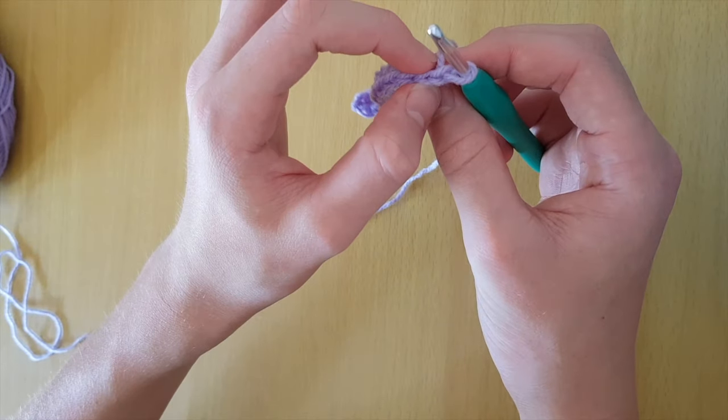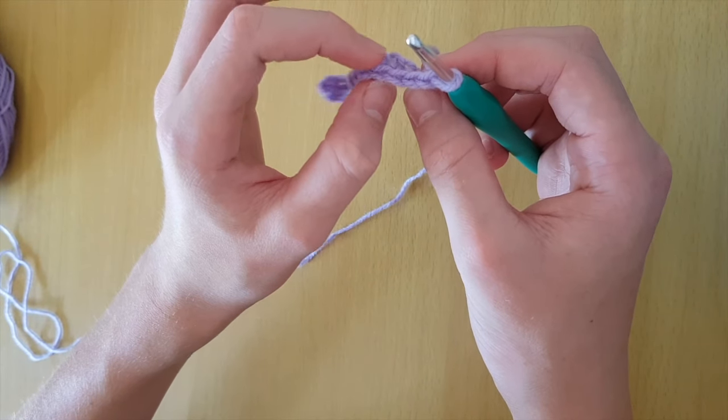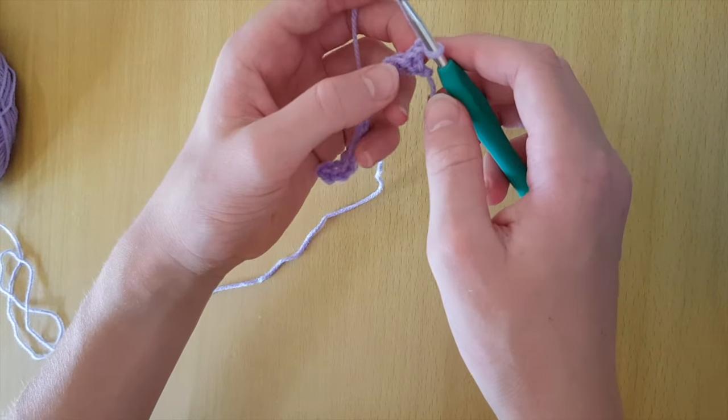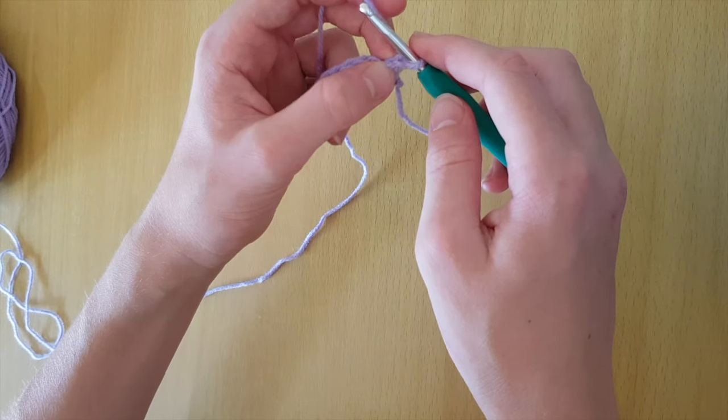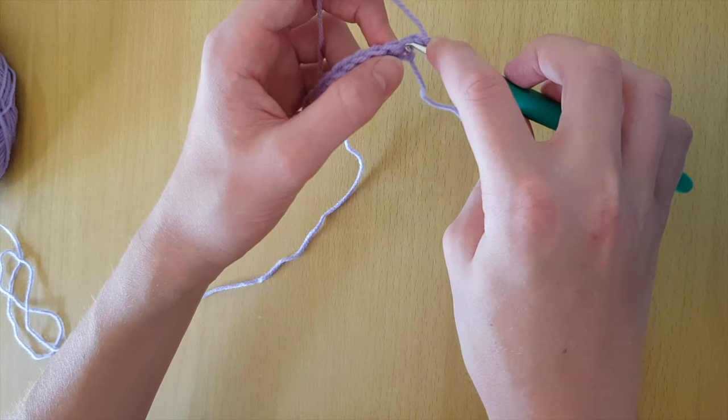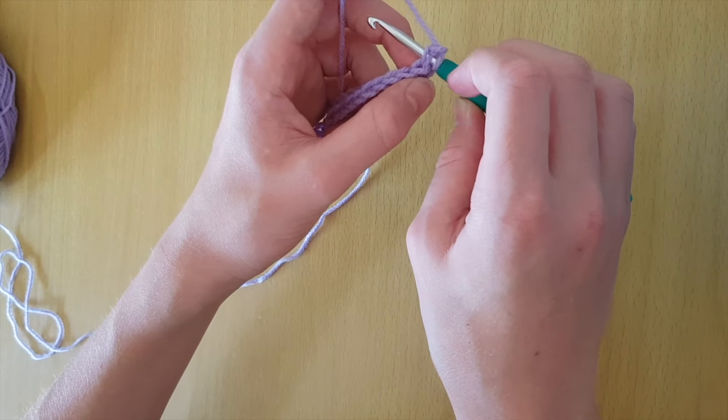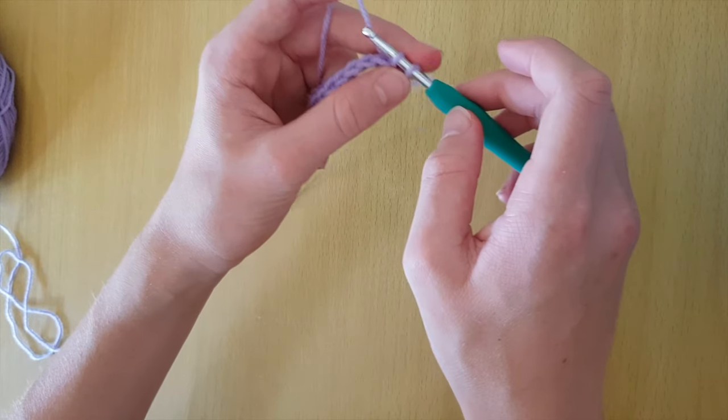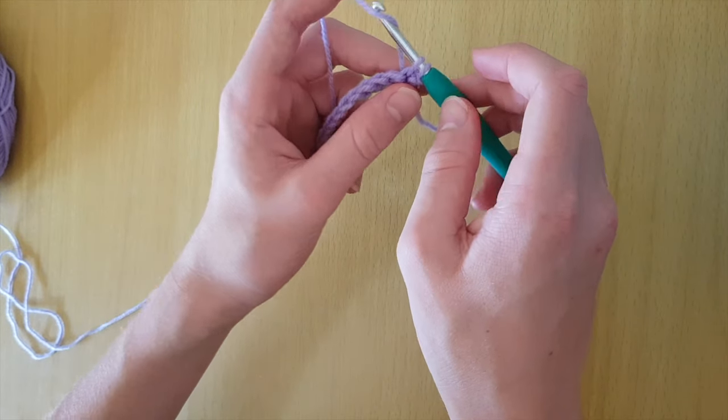This row you will be working into both V's of all of the stitches. This is different to the foundation chain row. This is also the row you will be repeating for the rest of the pattern. Make sure you don't work into your turning chain though. The single crochet stitch is exactly the same as the first round.